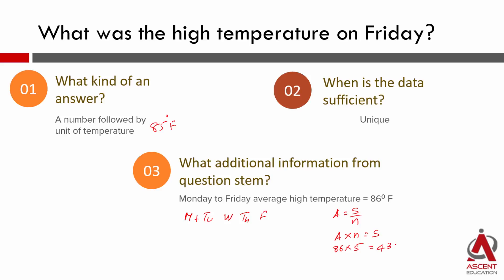86 into 5 is equal to 430. So from the question stem, we remember two things: the sum of temperatures on all 5 days is 430 degrees Fahrenheit, which is the same as saying the average for these 5 days is 86 degrees Fahrenheit.